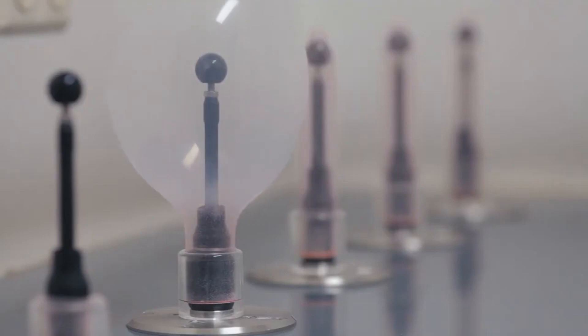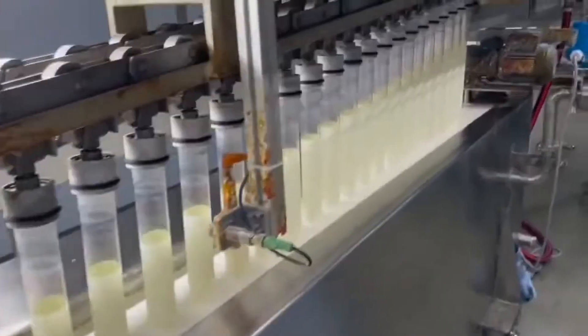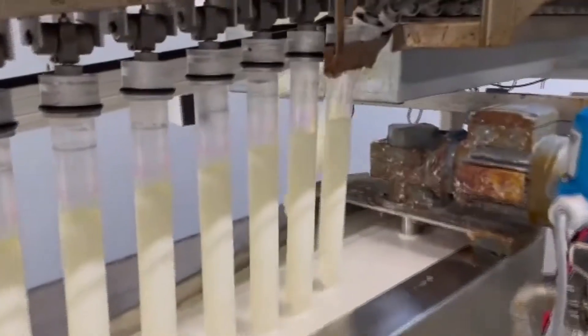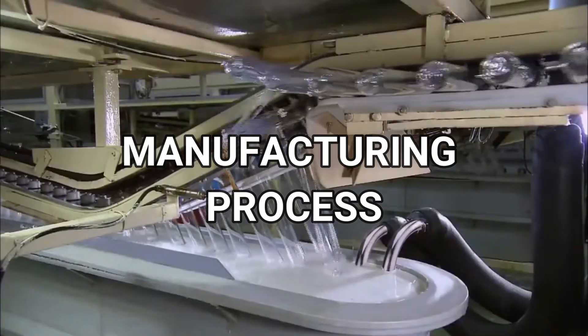Ever wondered how condoms get their shape? It's all in the dipping process. We'll take you behind the scenes to witness how condoms are formed through a precise dipping technique. Trust us, it's a mesmerizing sight. Now it's time for manufacturing process.